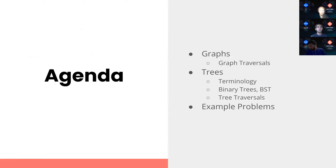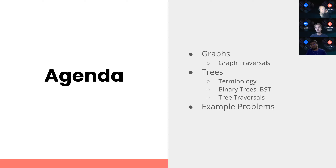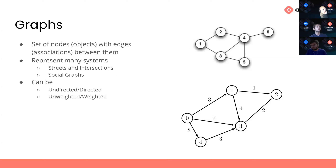We'll be talking about trees, which you might have more familiarity with from CS32, but we'll still go over the terminology, what binary trees are, binary search trees, and the tree traversal algorithms. Then finally we'll go over example problems. So — graphs are basically a set of objects with associations between them. Those objects are called nodes and the associations are called edges, and they look like this in picture form.